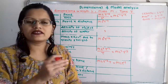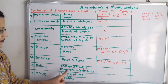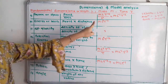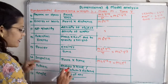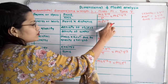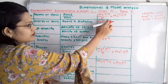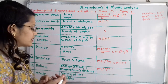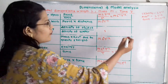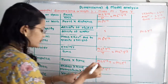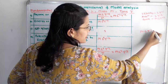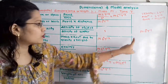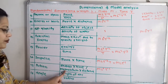Then action. Action is defined as energy into time, or equivalently momentum into distance. For energy into time: ML squared T raised to minus 2 multiplied by T gives T raised to minus 2 plus 1, that is ML squared T raised to minus 1. For momentum into distance: M into L into T raised to minus 1 multiplied by L gives ML squared T raised to minus 1. Both formulas give the same result.